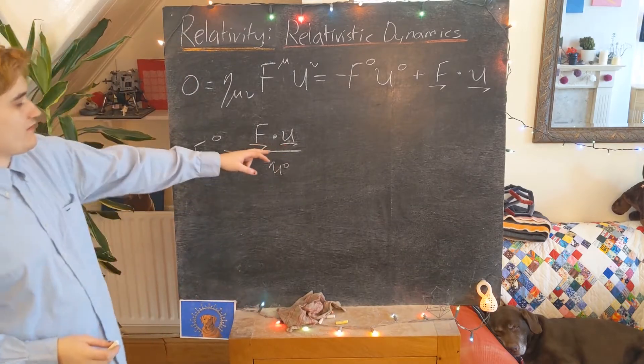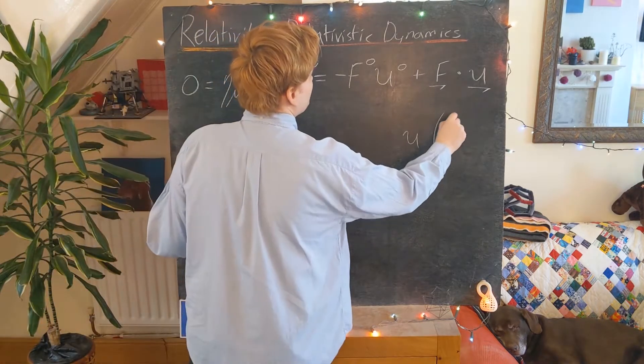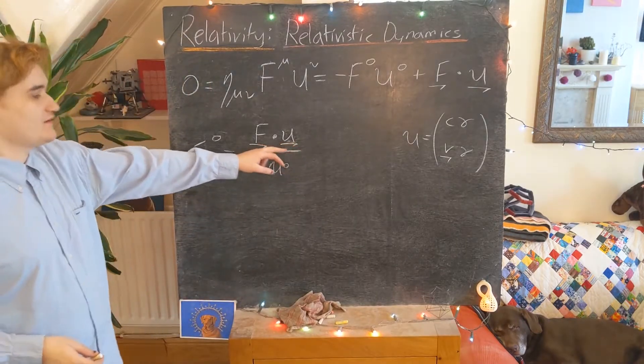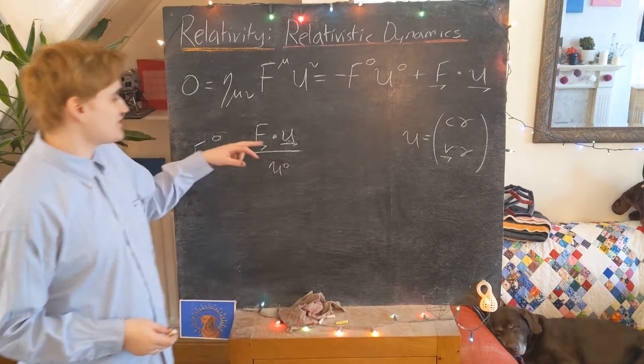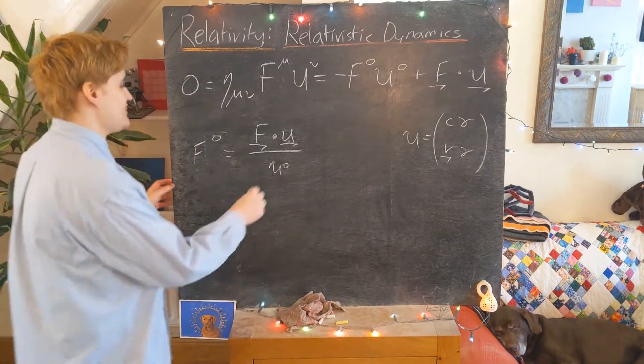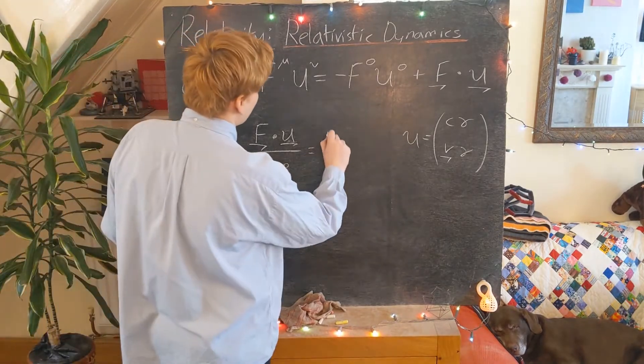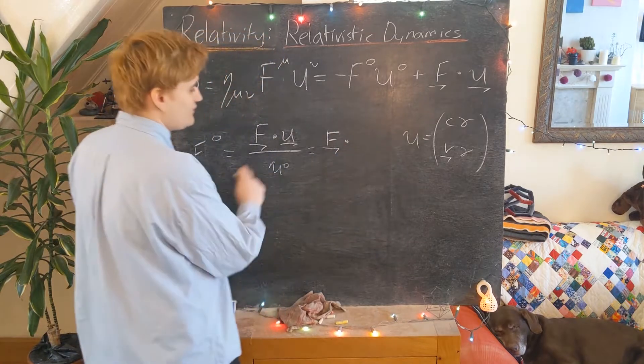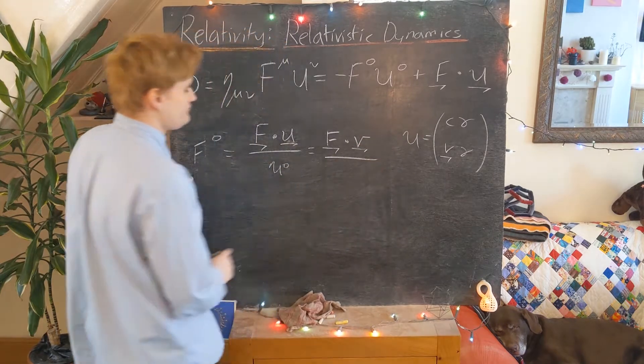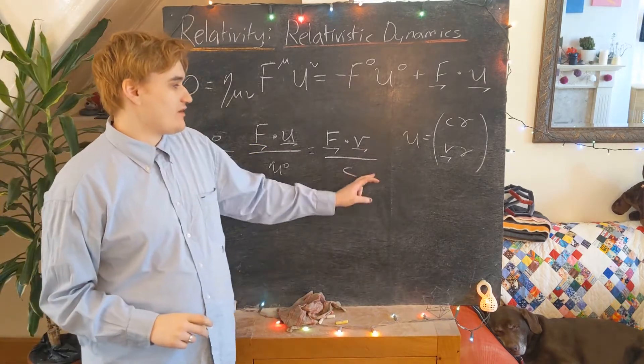We're going to isolate this time component as being f dot u over u0. Now we can do some more rewriting. If we remember that the spatial part of our four-velocity vector has the following form, we can realize that this u vector piece is just going to be v gamma, and this u0 is just another c gamma. So the gammas will cancel, and we're left with f dotted with the coordinate velocity over c.